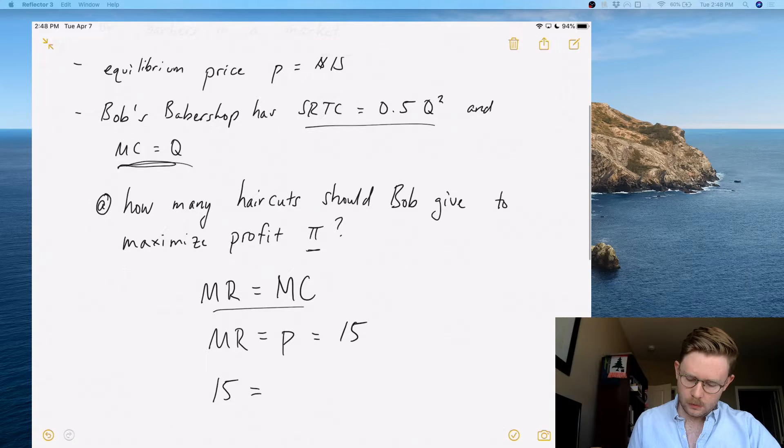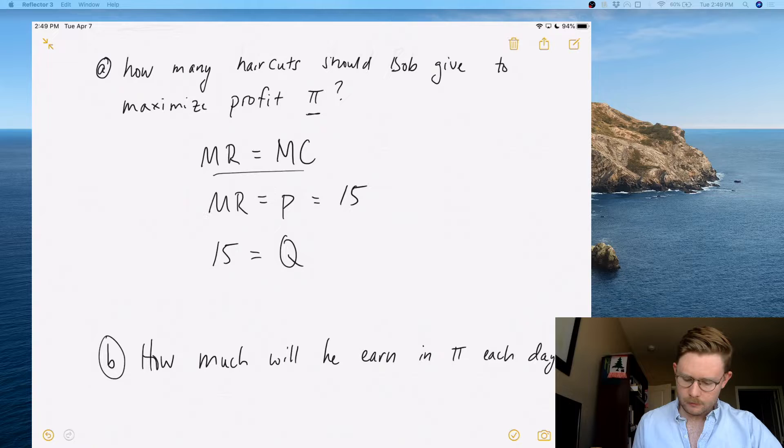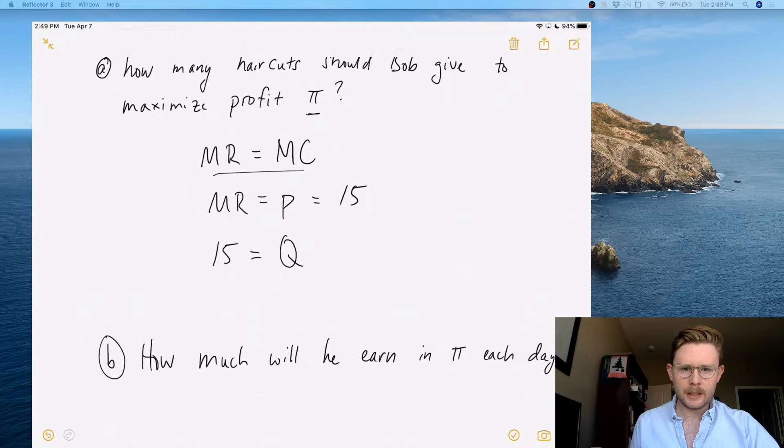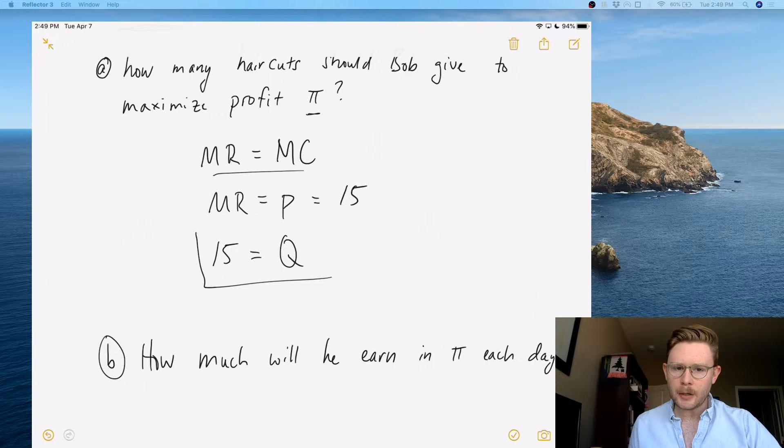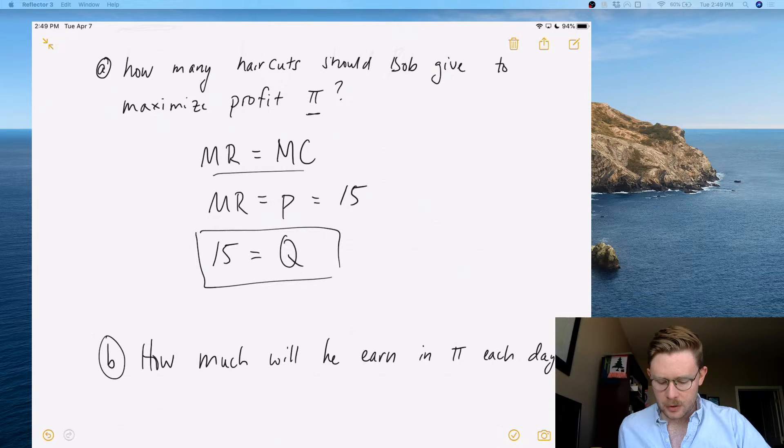So 15 equals Q, and that's your answer. Super simple. Just remember marginal cost equals marginal revenue—that's your profit maximization condition—and then substituting whatever your marginal revenue is. In this case, it's just the price, which is 15. And because this is a super simple example, marginal cost just equals Q, so when you substitute in the marginal cost, it gives you your answer.